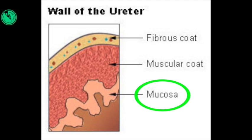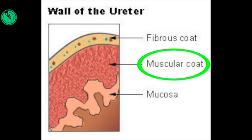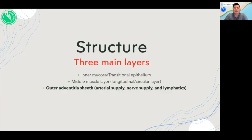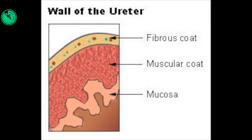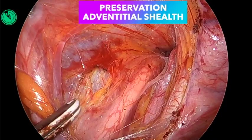The ureter is composed of three main layers. First is the inner mucosa, also known as the transitional epithelium, which allows for the expansion of the ureter with urine collection. Next is the middle muscle layer, which is composed of the longitudinal and circular layers, allowing for ureteral peristalsis. And lastly is the outer adventitial sheath, also known as the fibrous coat, which houses the ureter's arterial blood supply, nerve supply, and lymphatics. Because of this, it's vitally important to maintain the ureteral sheath when conducting ureter lysis.